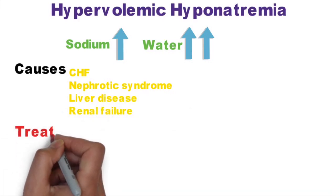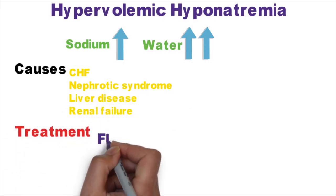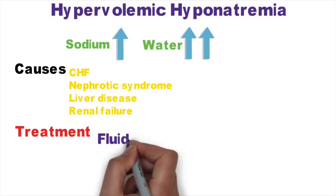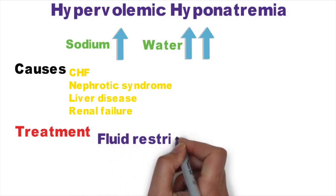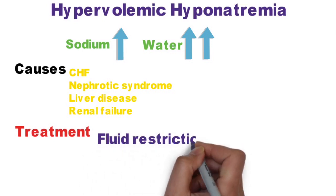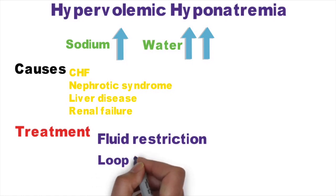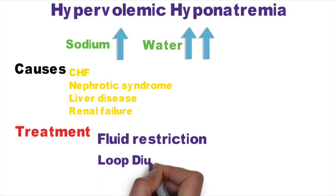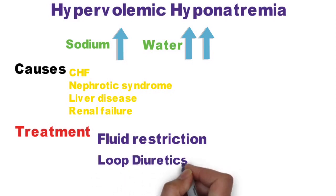Hypervolemic hyponatremia can be due to congestive heart failure (CHF), nephrotic syndrome, liver disease, or renal failure. The treatment of hypervolemic hyponatremia is treatment of the underlying cause, with fluid restriction with or without loop diuretics.